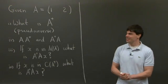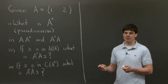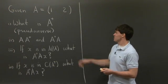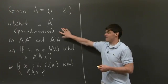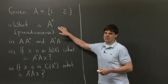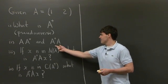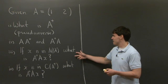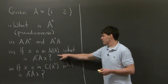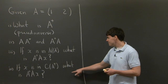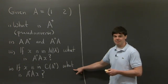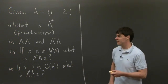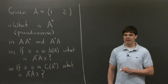Hi everyone, welcome back. Today I'd like to tackle a problem on pseudo-inverses. Given a matrix A which is not square — it's just 1 and 2 — first, what is its pseudo-inverse? I'm using A+ to denote the pseudo-inverse. Then secondly, compute A+A and AA+. Thirdly, if x is in the null space of A, what is A+A acting on x? And lastly, if x is in the column space of A transpose, what is A+Ax? I'll let you think about this for a bit and I'll be back in a second.